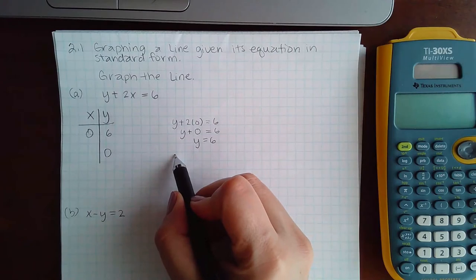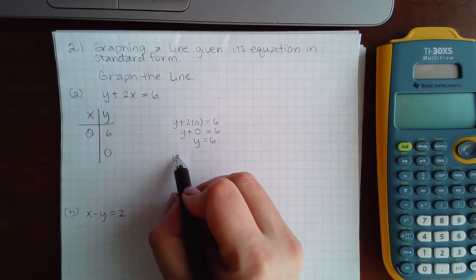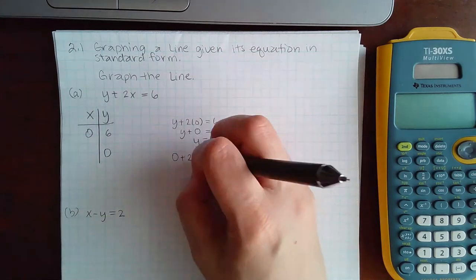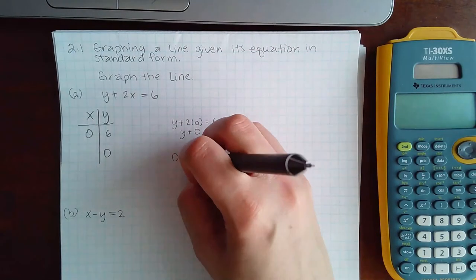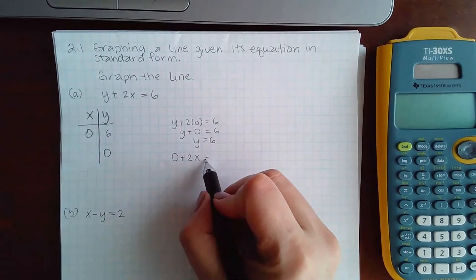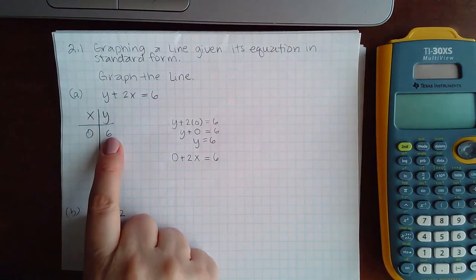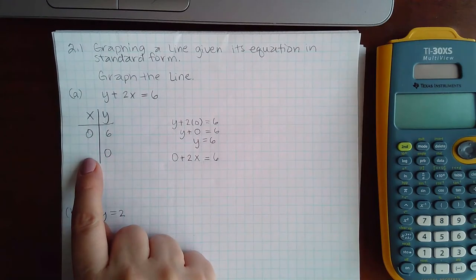When I plug in 0 for y the problem becomes 0 plus 2x equal to 6. Be careful not to try to plug in 0 for x and y at the same time. You need to do one, find the other, then do the other and find this one.